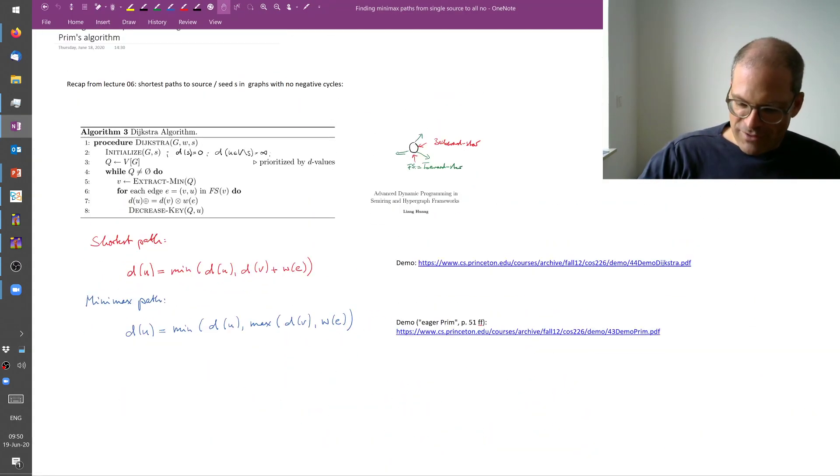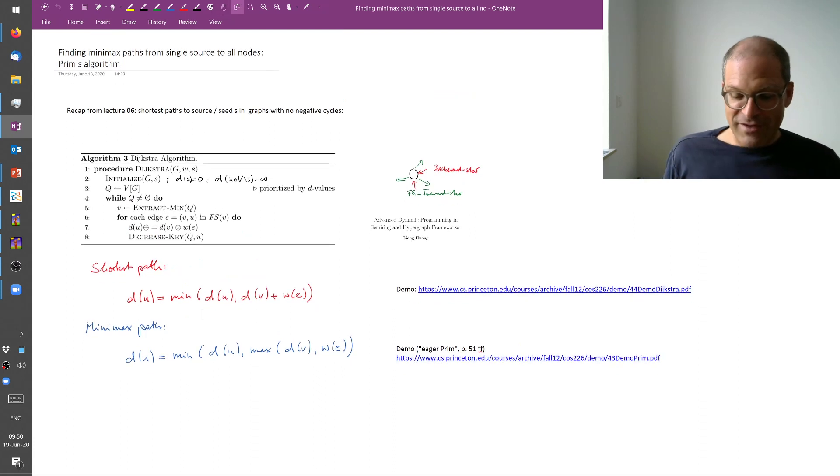So this is called Prim's algorithm. We start at the source node. We always follow the lowest edge weight outward. We accumulate edge weights not by adding but by simply always taking the biggest edge weight that was encountered so far.